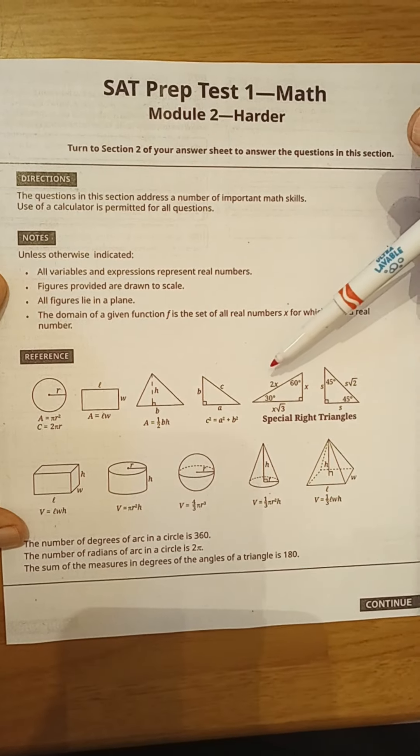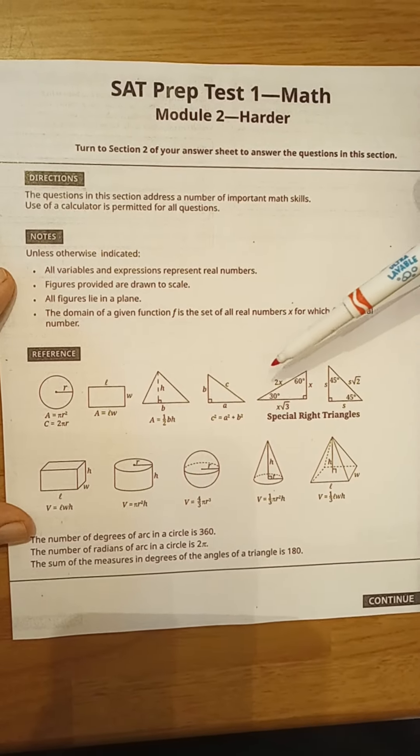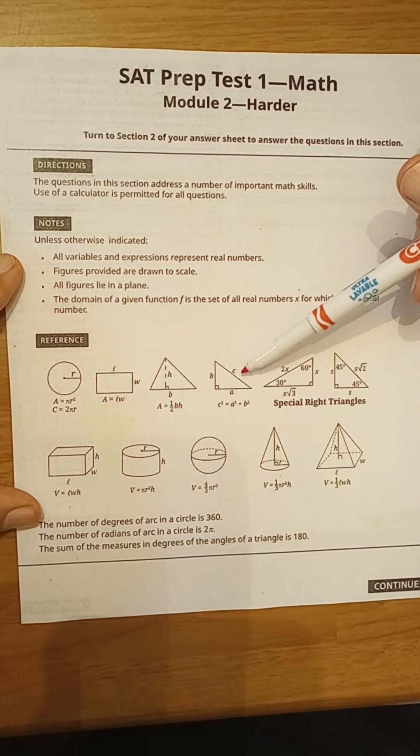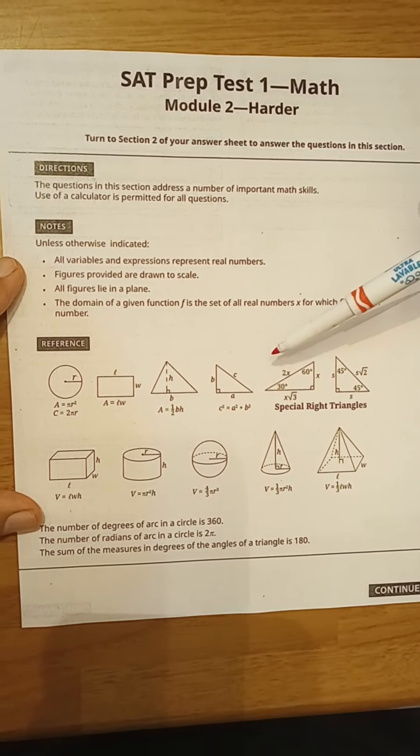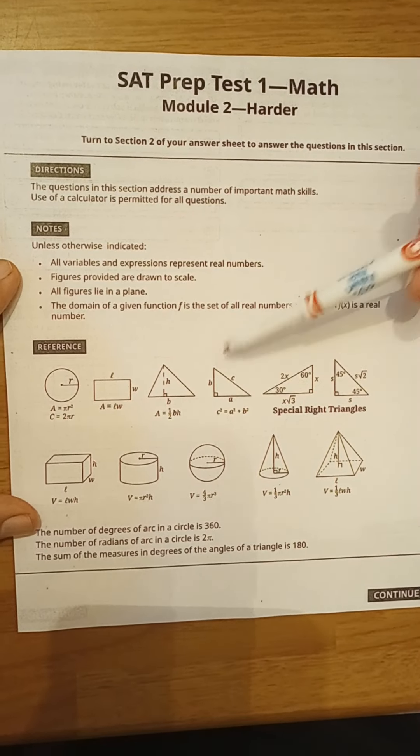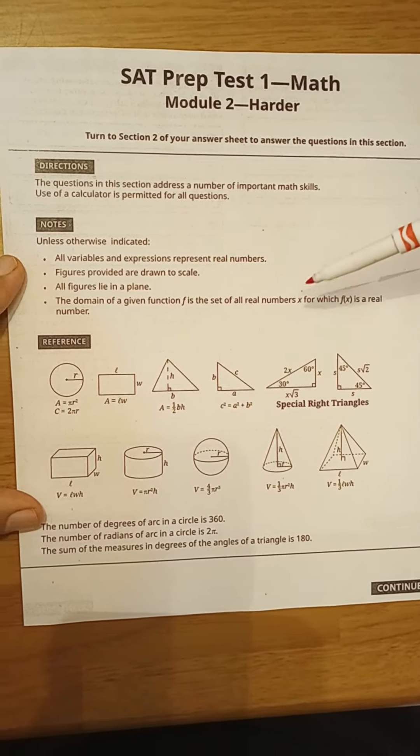For a right triangle, we have the Pythagorean theorem: a squared plus b squared equals c squared, where c is always the hypotenuse. It doesn't matter whether you call the base a or b or the height a or b, but the hypotenuse must always be c.